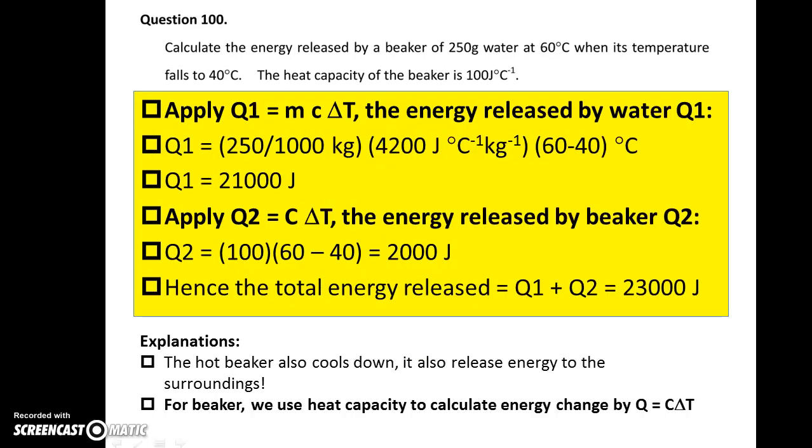Question 100. In this question, there is not only the hot water, but there is also the beaker. The hot beaker also becomes cold, and so the beaker also gives out energy. The hot water gives out energy given by the formula mc delta T. The beaker also gives out energy given by the formula capital C multiplied with delta T, the change in temperature. So the total energy given out would be Q1 plus Q2. That gives the correct answer for that question.